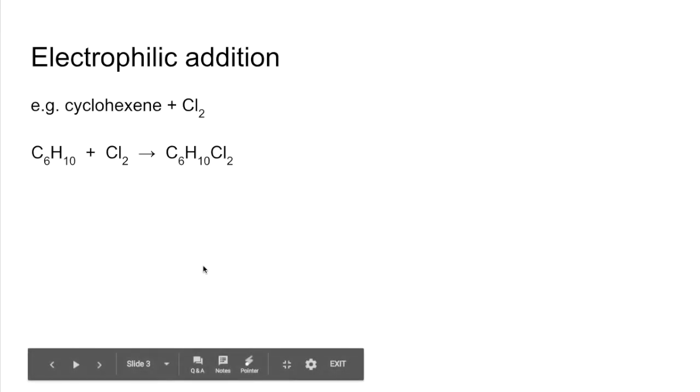So the next mechanism we'll look at is electrophilic addition and I'm going to use cyclohexene and chlorine as my example. So keeping it very similar to the previous one. So there's the overall reaction. C6H10 reacts with chlorine and we get an addition reaction. So two reactants become one product.